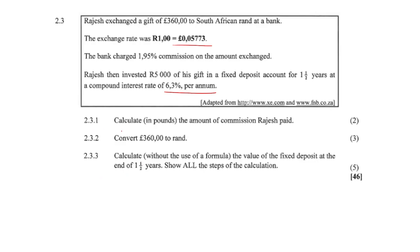Question 2.3.1: Calculate in GBP the amount of commission that Rajesh paid. It was 1.95% commission times the 360 pound amount. So 1.95% times 360 pounds gives us an answer of 7.02 pounds.